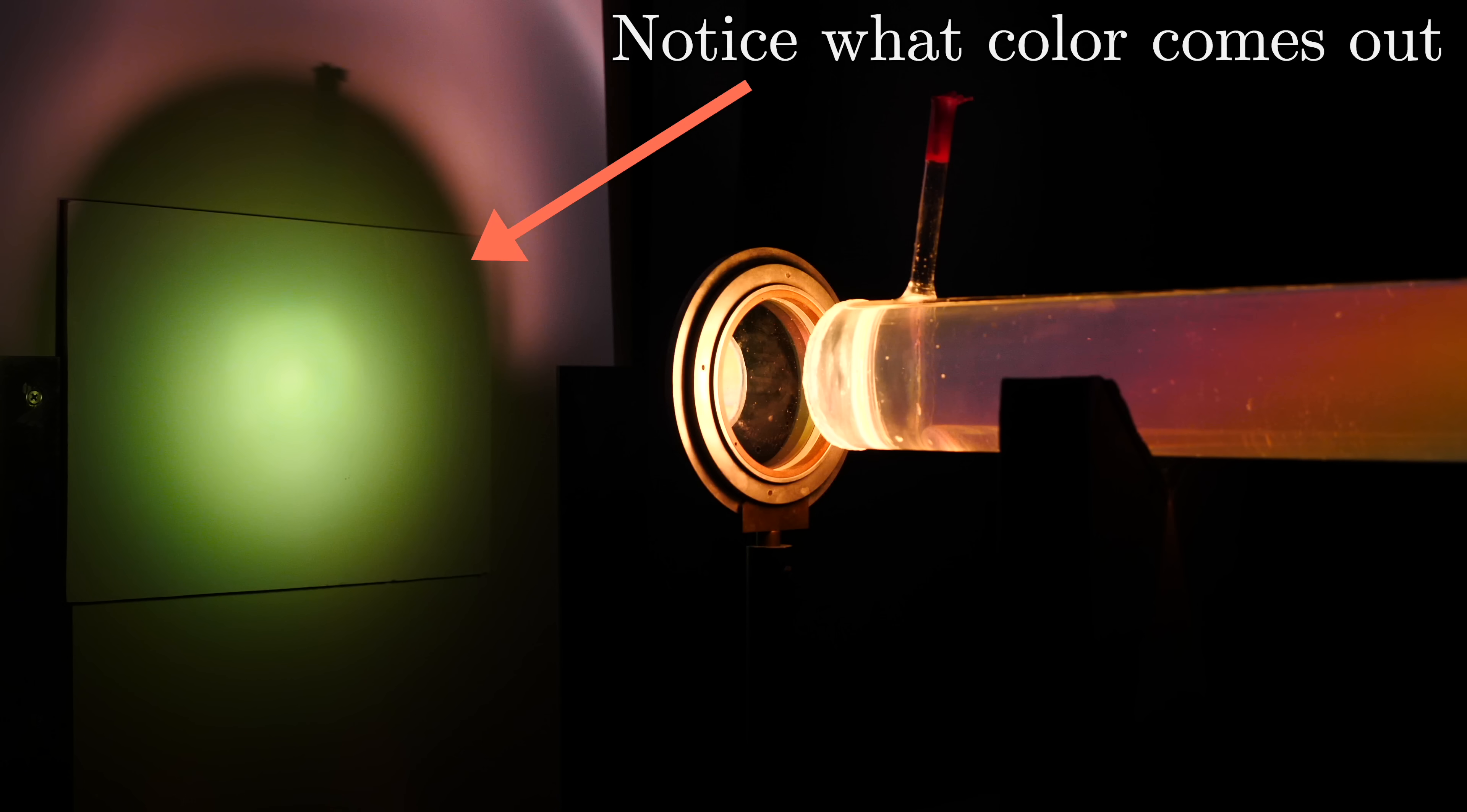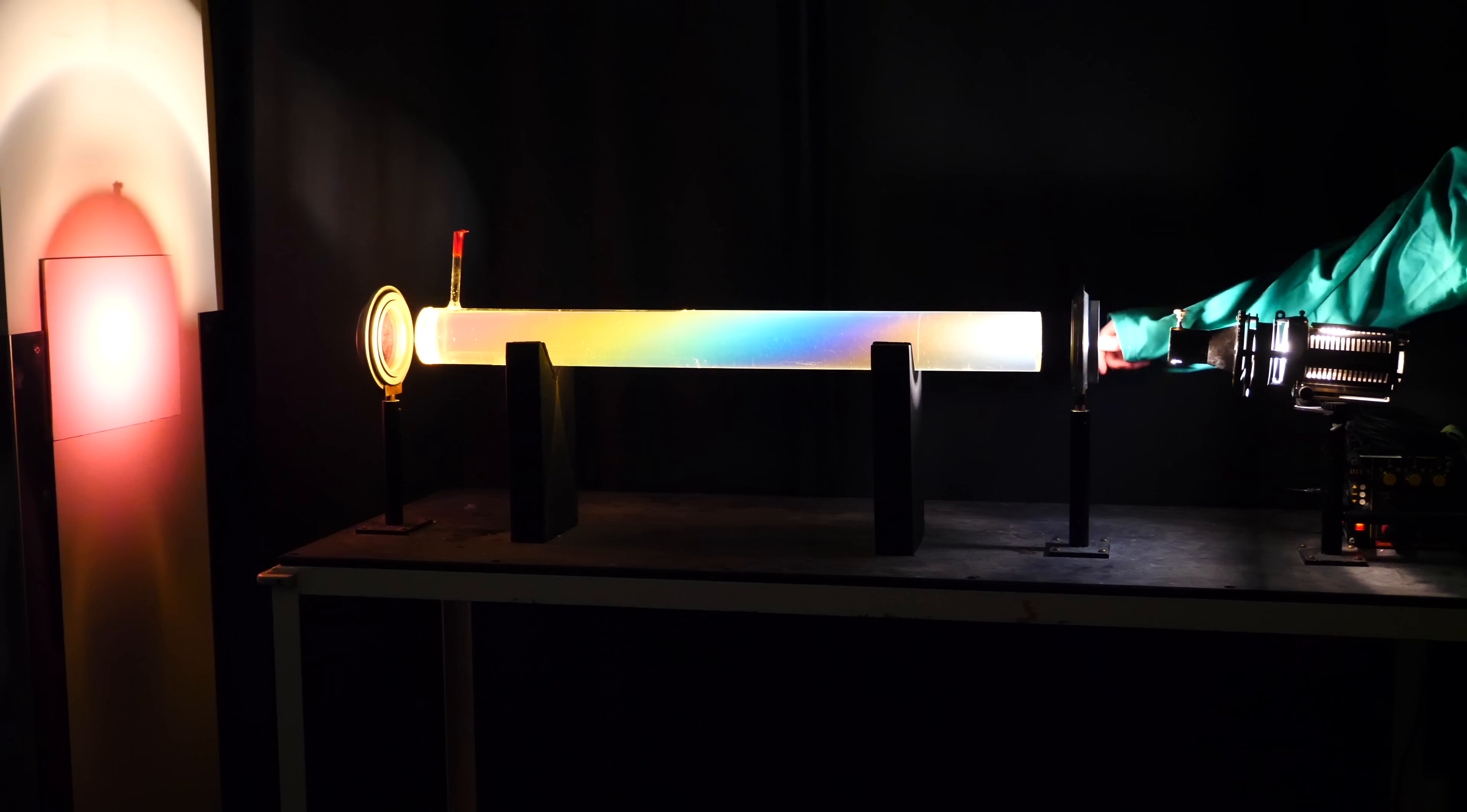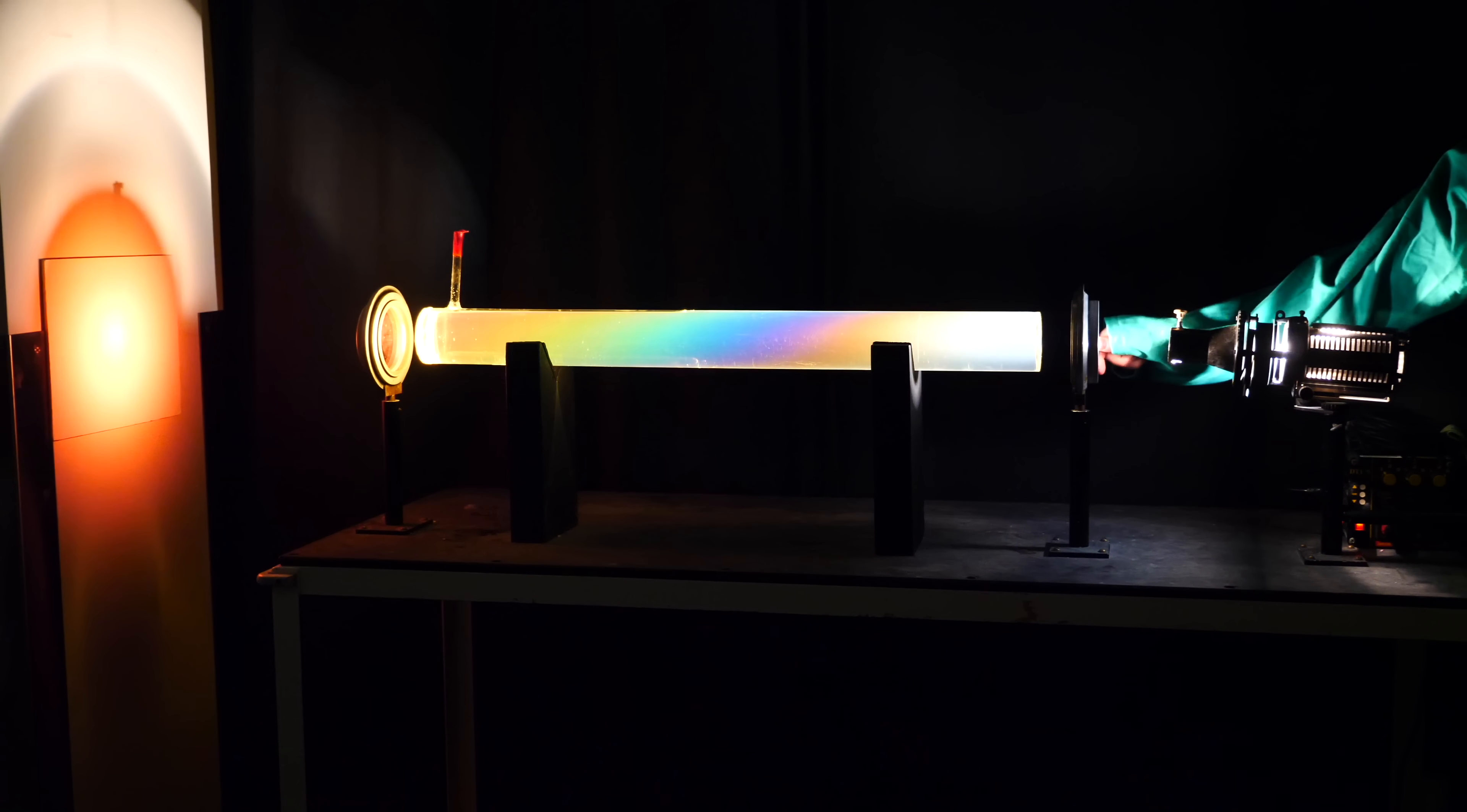And notice if we rotate the whole setup, say by twisting the initial polarizing filter, then that changes the components of each pure frequency that happen to be vertical, resulting in a different balance of all those colors. Which is why rotating the initial filter changes the color you see coming out the other end.